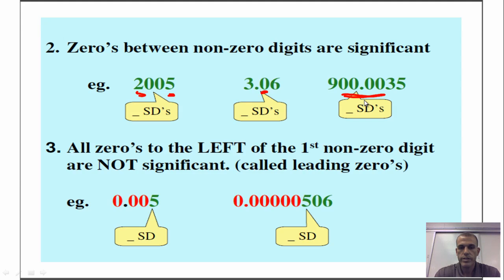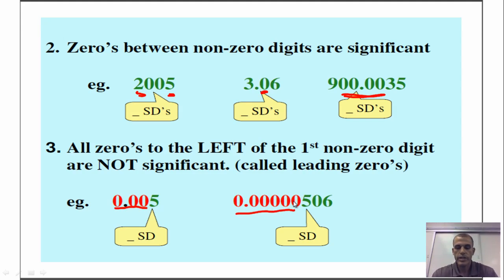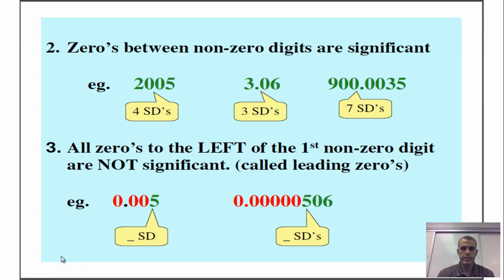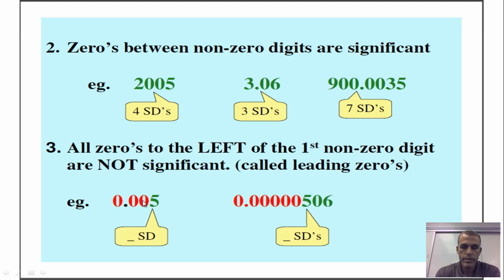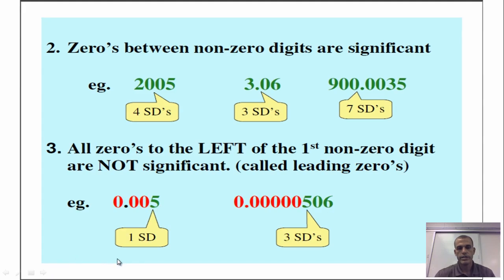Rule number three: all zeros to the left of the first non-zero digit are not significant. Looking at the answers: our first set has four digits; three and seven — the zeros count because they are bookended by non-zero digits. Anything to the left of these numbers is not significant, giving us one significant digit and three significant digits. The color coding helps lead you to the right answers.